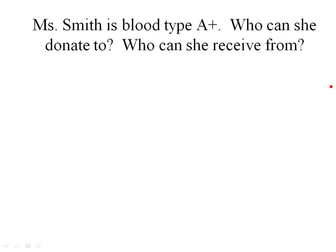Let's work out an example. Ms. Smith is blood type A positive. Who can she donate to and who can she receive from? She has antigen A and RH antigen. You can always donate to what matches. Can A positive give to anything that's an O? The answer is no — if A positive blood goes to an O, the O will say A antigen is foreign and attack it. Can A positive be given to A negative? No, because A negative would see the RH antigen and say I don't have that — RH antigen is foreign to me — and attack it.